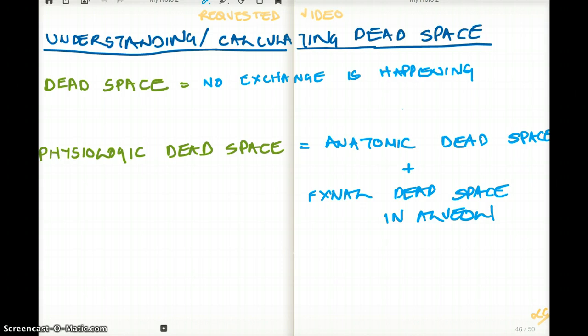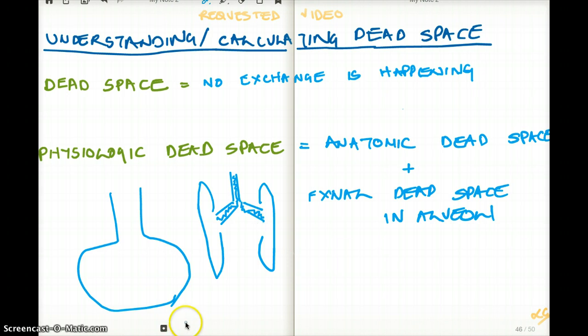So what exactly is dead space? Dead space is a region in the lung where there is no exchange happening. Let me explain what I mean by that. Let's say this is your lungs, this is your bronchioles, and your lungs start here. Air that is going to be in your bronchioles, is it going to be participating in exchange during respiration? Not really.